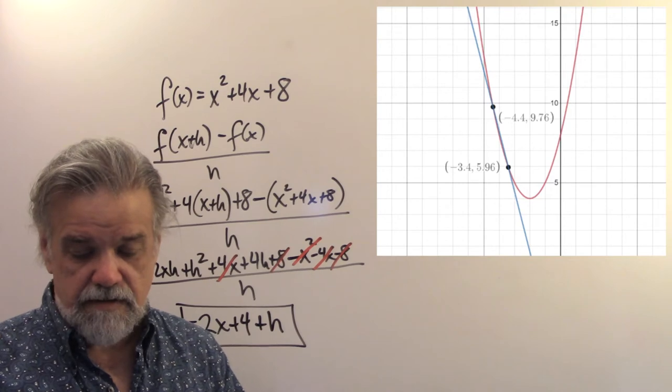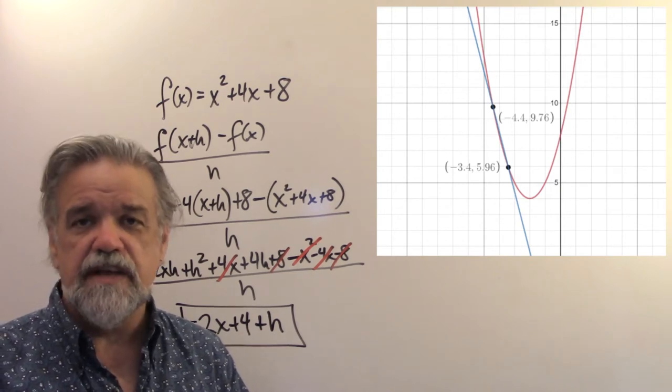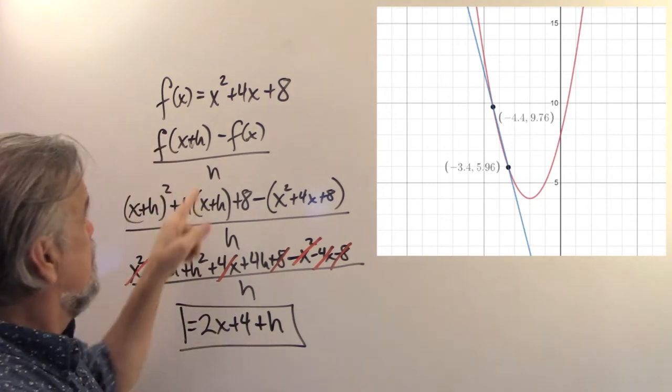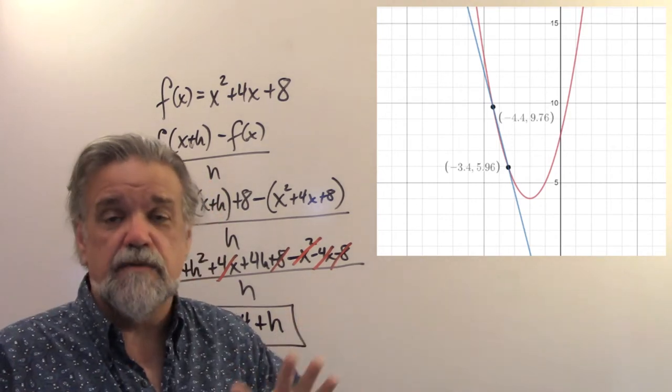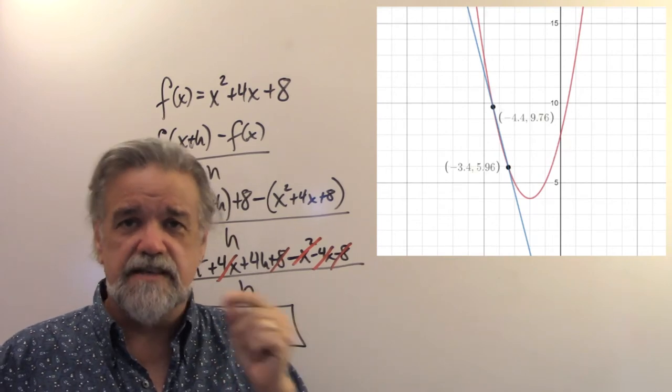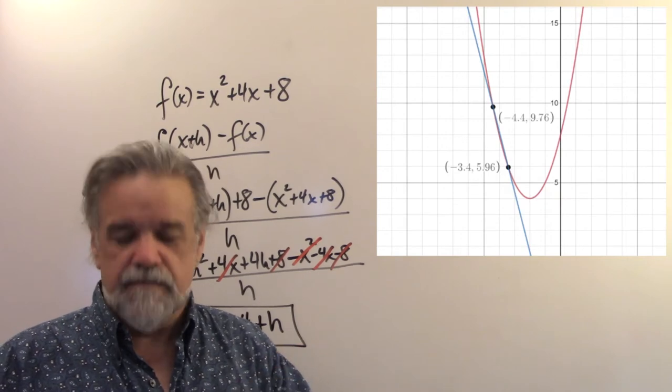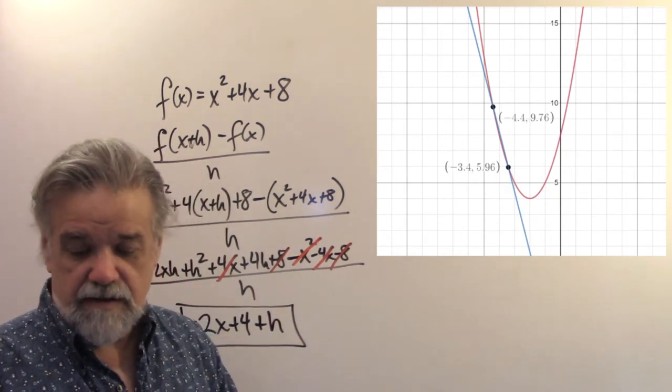So, here is x squared plus 4x plus 8. And what I'm doing is I'm using an h of 1. So, h can be any number. Your difference quotient is actually a function of two variables, x and h. But h, well, I'll talk about that in a second.